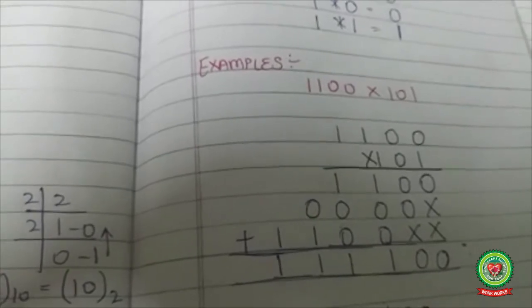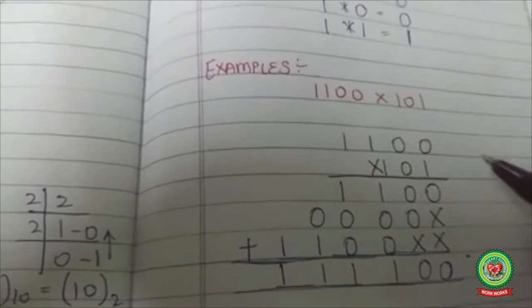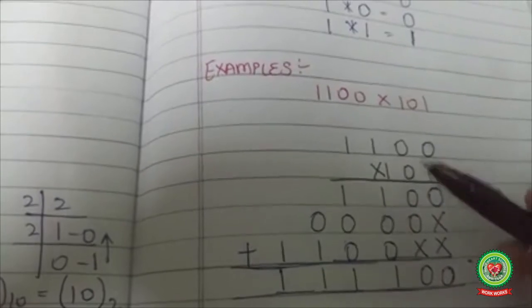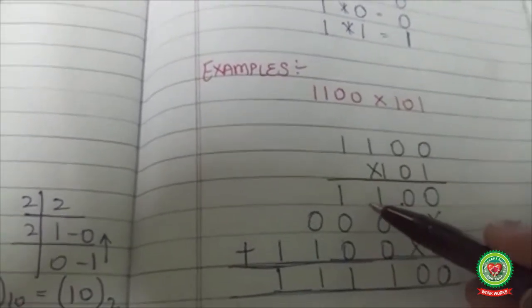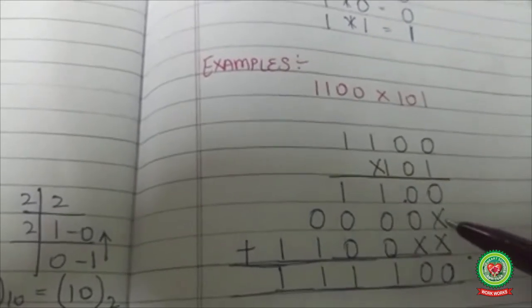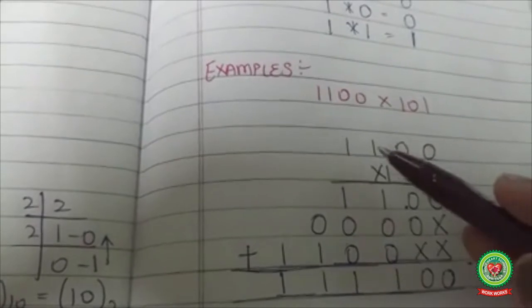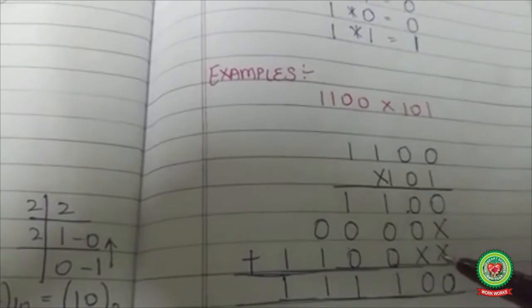1100 multiply by 101. You are going to perform 3-digit multiplication. First digit: 1 times 0 is 0, 1 times 0 is 0, 1 times 1 is 1, 1 times 1 is 1. Second digit: all zeros. Third multiplication: 1 into 0 is 0, 1 into 0 is 0, 1 into 1 is 1, 1 into 1 is 1.